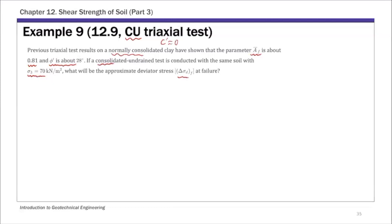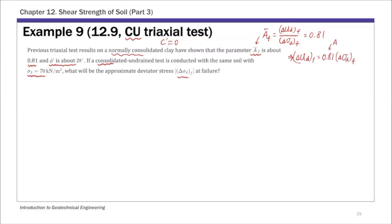Skempton's parameter A-bar-f is defined as the ratio of excess pore water pressure at failure, delta u_df, over the deviator stress at failure, delta sigma_df. This ratio we know is 0.81. From this, we get the relationship: the excess pore water pressure at failure delta u_d equals 0.81 times the deviator stress at failure, delta sigma_df, where 0.81 is A-bar-f.